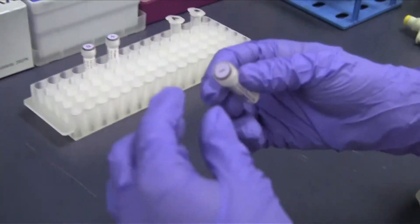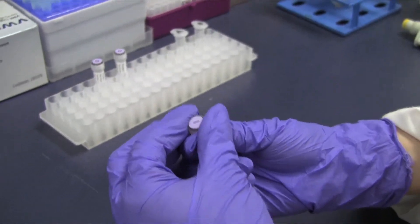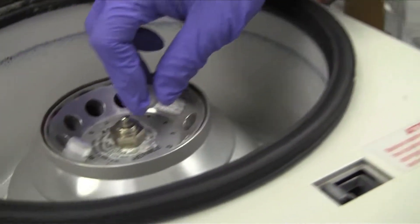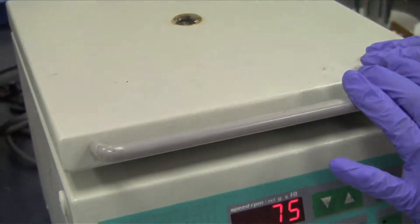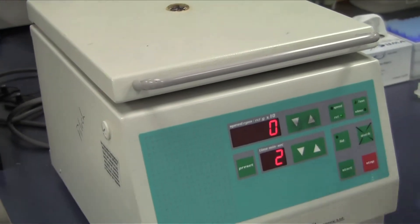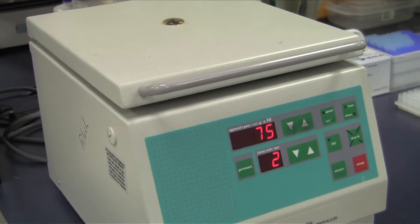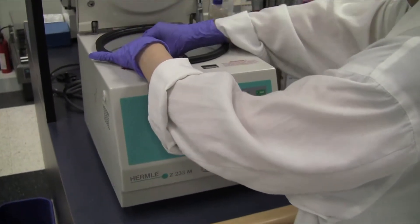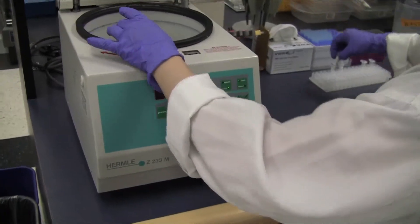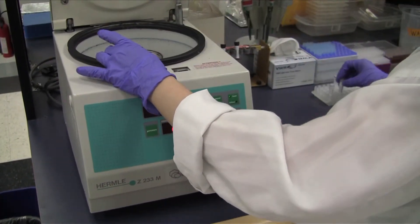Place the column into a collection tube part CAMI and centrifuge for 2 minutes at 750 times G. Remove the column and discard the collection tube with liquid.